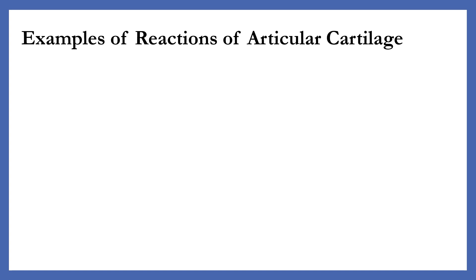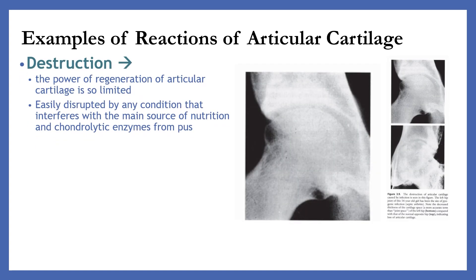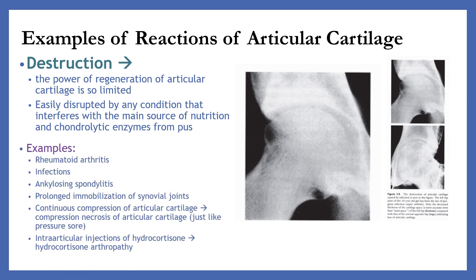Examples of reactions of articular cartilage. Destruction: the power of regeneration of articular cartilage is very limited. It is easily disrupted by any condition that interferes with the main source of nutrition and by chondrolytic enzymes from pus. Examples are rheumatoid arthritis, infection, ankylosing spondylitis, prolonged immobilization of synovial joints, and continuous compression of articular cartilage, which leads to compression necrosis of articular cartilage, just like a pressure sore. The last example is intraarticular injection of hydrocortisone, which leads to hydrocortisone arthropathy.